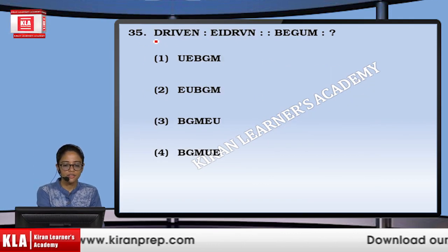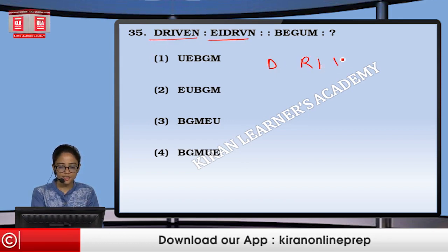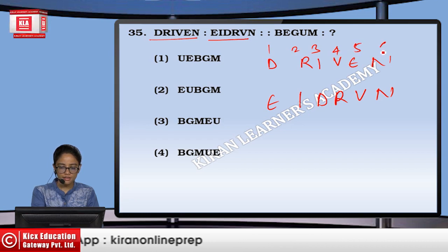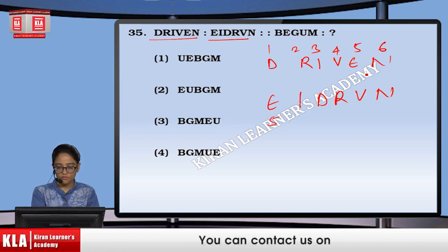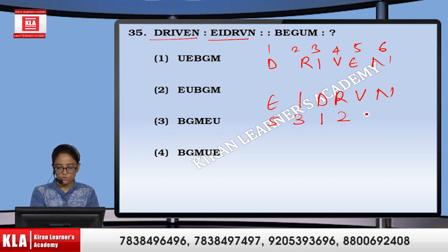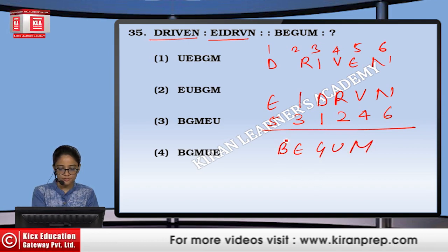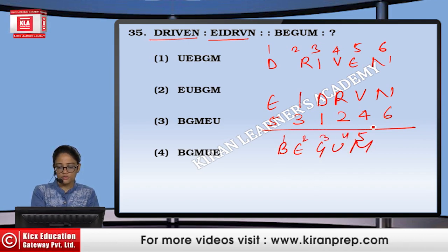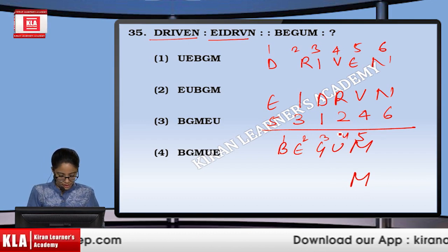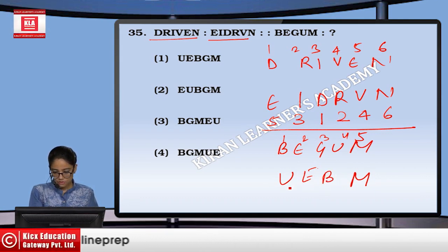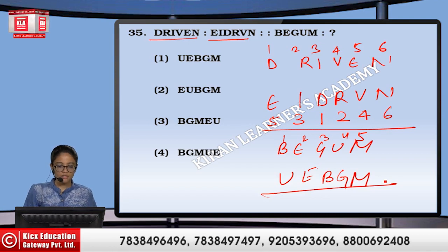Next question — DRIVEN is written in a coded form. These are just rearrangements of the alphabets. If we number them 1, 2, 3, 4, 5, 6, the pattern is 5th, then 3rd, then 1st, then 2nd, then 4th, then 6th. Following the same pattern for another word, we write U, then E, then B, then G. So this is the answer — option number 1.